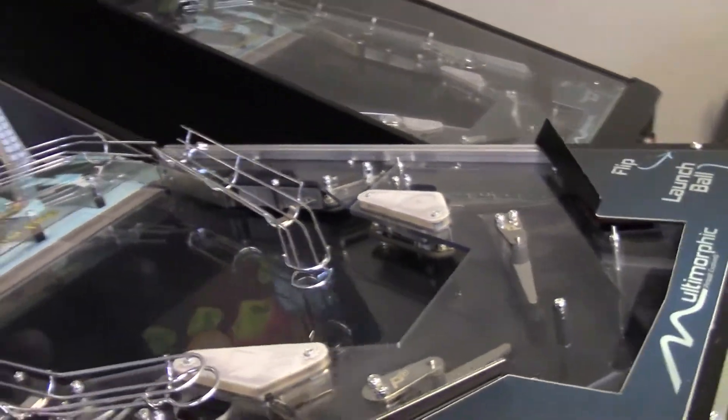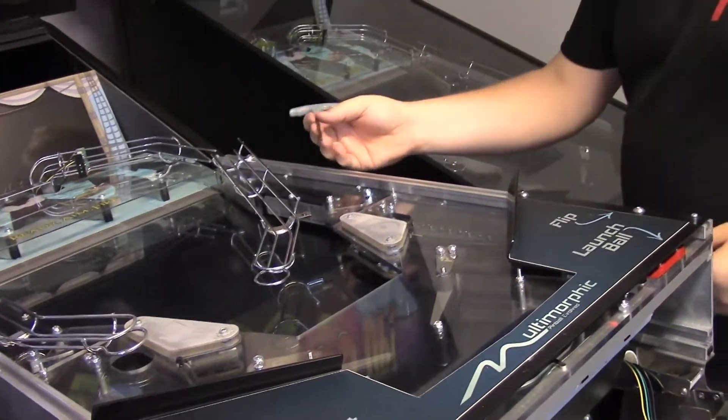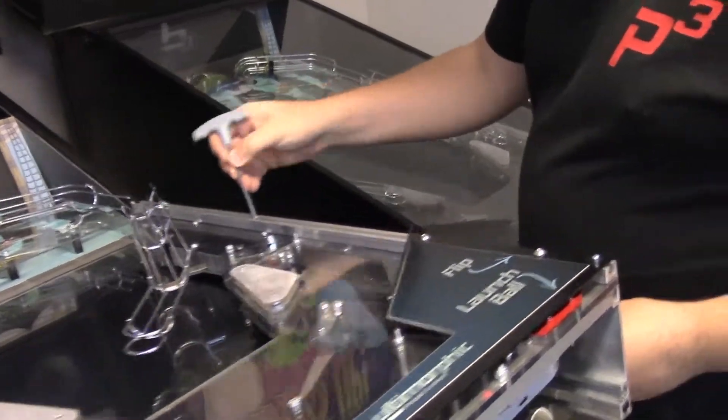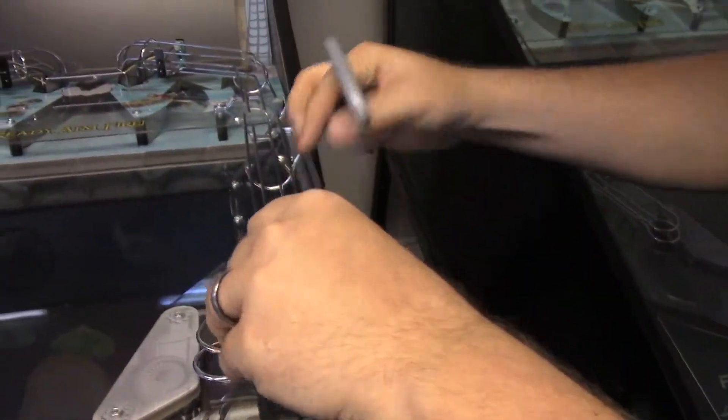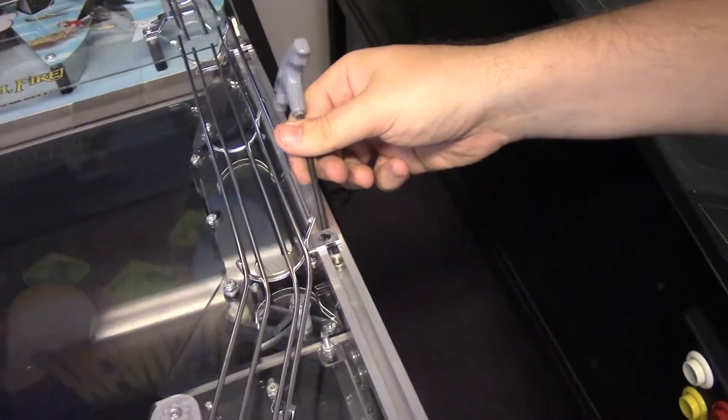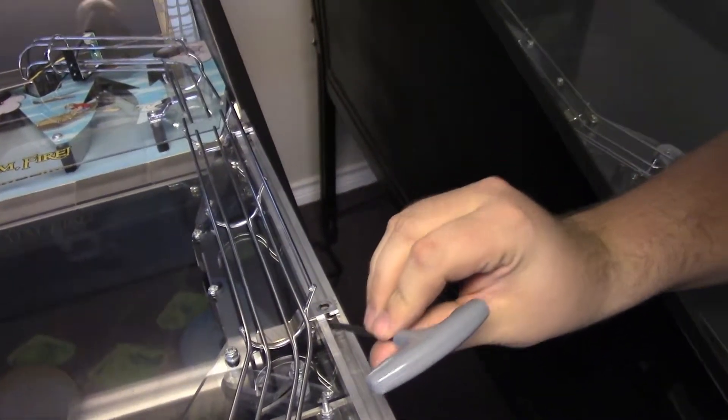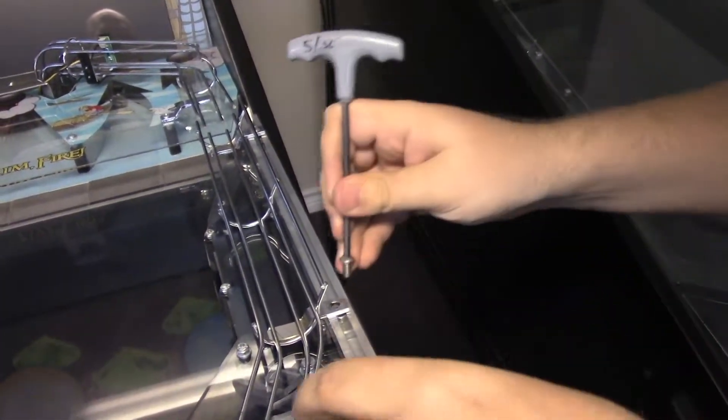Tighten it back down. Then move the wire form into place. In doing so, this nut that the wire form mounts to, it may have slid forward or back. If that's the case, you can just slide it forward or back with your tool to realign it up. I'm going to start that screw.